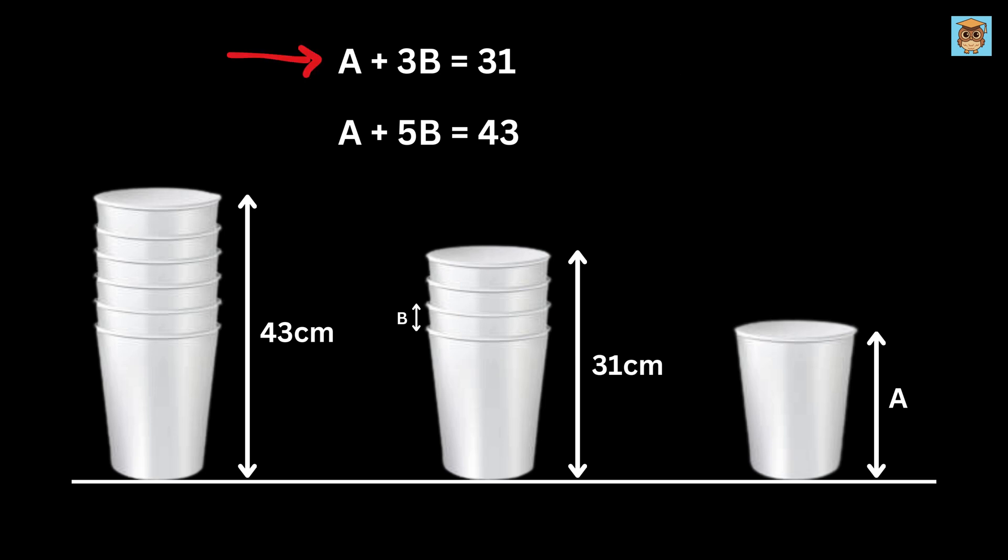Let us subtract this equation with this one to get A plus 5B minus A minus 3B equals 43 minus 31. This will get cancelled out and we will be left with two times B equals 12, and thus B will be equal to 12 over 2 or 6 centimeters.